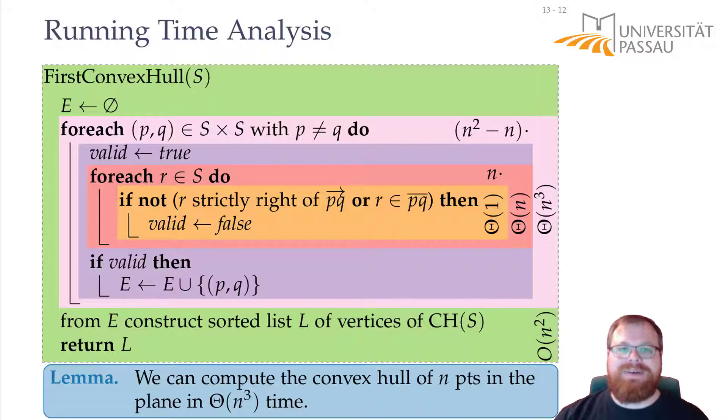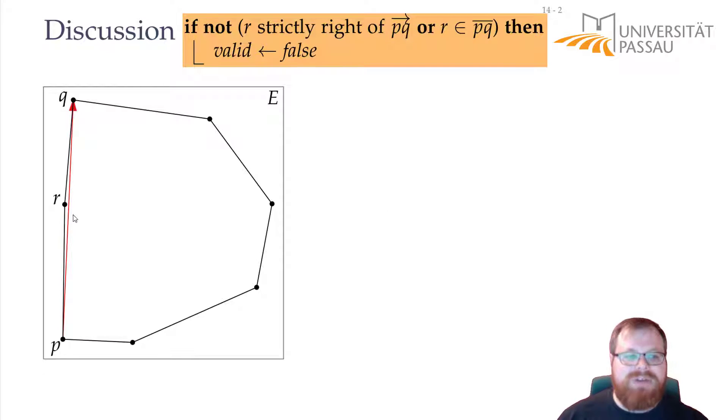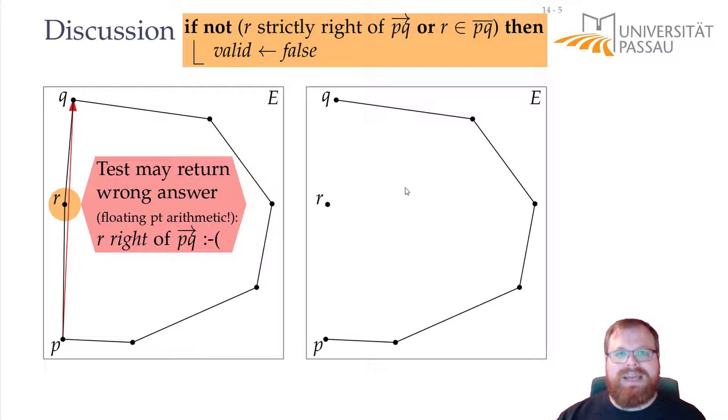But there is an even worse problem with this algorithm that I want to talk about. This problem is in the part where we are testing if a point lies strictly to the right of a directed line or not. I told you we can simply calculate the determinant of the matrix to figure it out. This sounds easy enough. In practice, it may happen that a point lies very close to a segment between two vertices. And if we ask a computer, does this point r lie to the right or to the left of this segment from p to q, we might get the wrong answer. And the problem is that we need floating point arithmetic for that. And computers are not very good with this. You can approximate it to some degree, but you still might get the wrong answer.